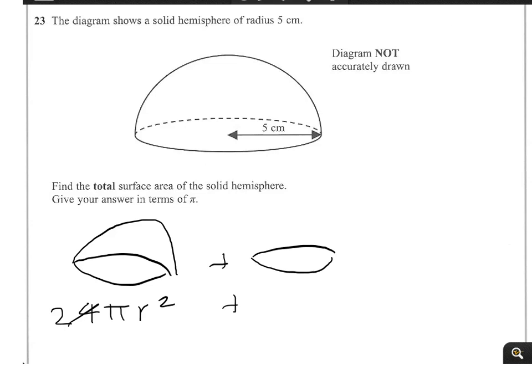And then we need the base, which is the area of a circle, which is pi r squared. Now our value of r is 5 in this problem.